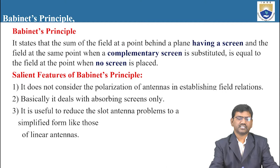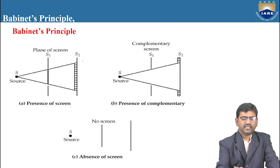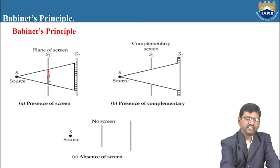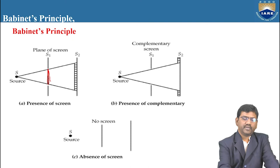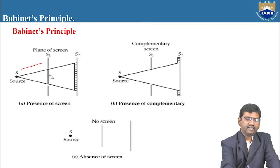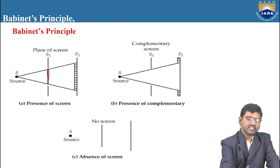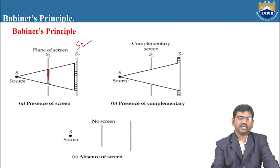Let us briefly describe what Babinet's Principle states using the figure. Here you can see a slot placed in a plane screen. S is a point source radiating electromagnetic radiation towards the plane screen. As we have placed a slot in the plane screen, only some amount of radiation is blocked by the screen. The remaining amount of radiation from source S will fall on screen S2.